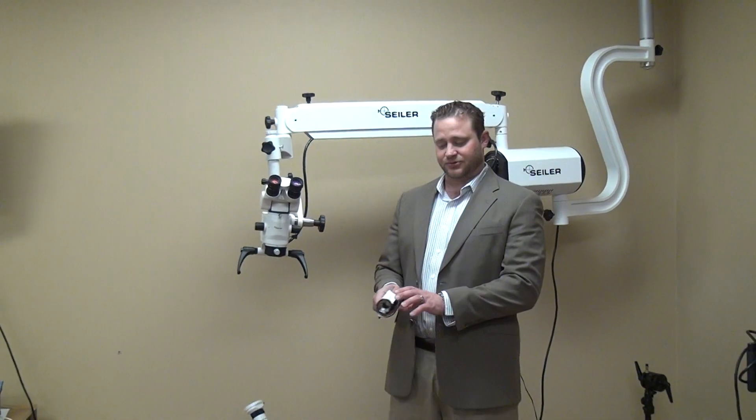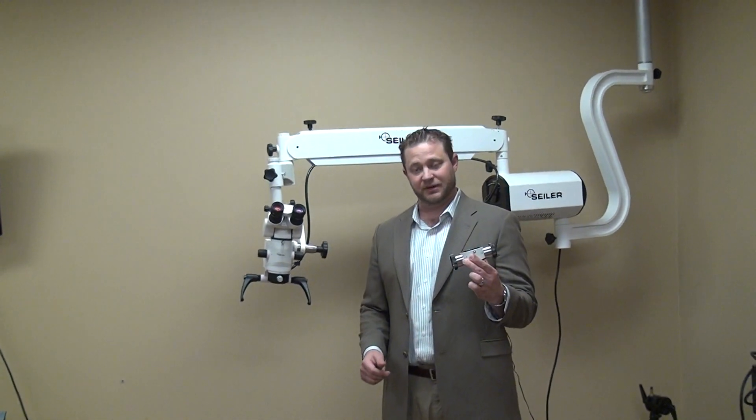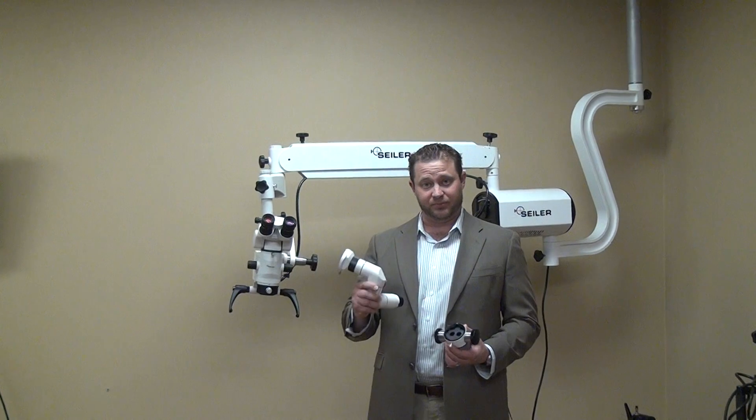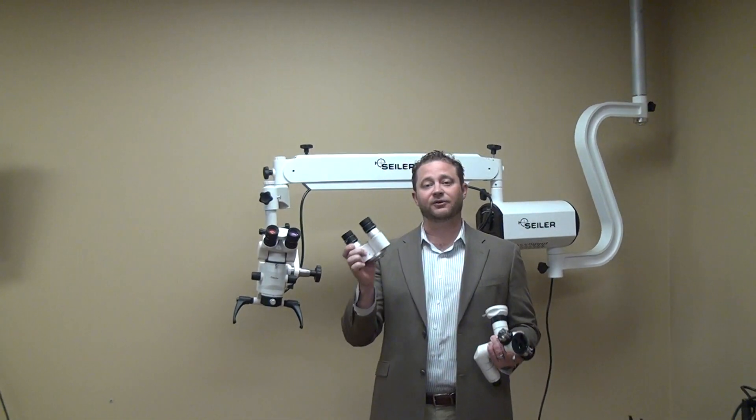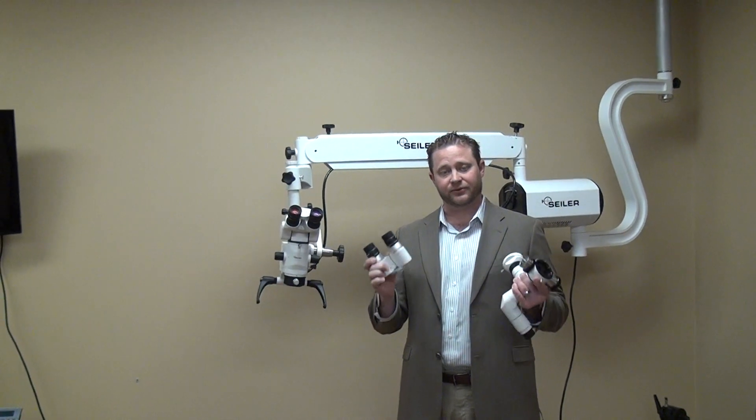The three accessories you're going to need are a beam splitter, your tube coupler, and the actual binocular head that will fit onto the tube coupler. So there are three individual parts.